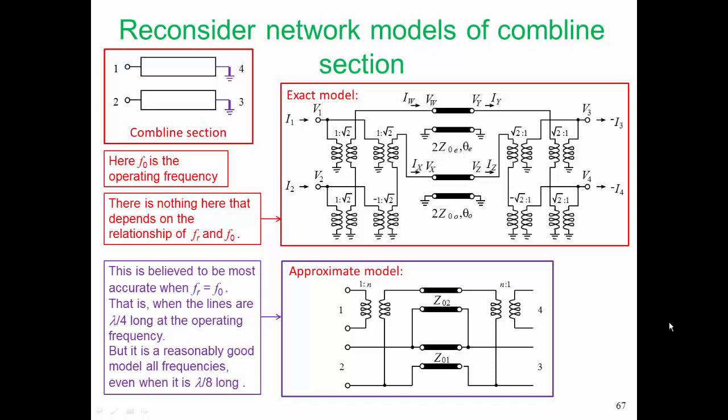So this approximate model doesn't depend on that relationship of FR equal to F0. That happens to be when the model is the most accurate, but it is pretty good at other frequencies. Now in the end, we can live with these approximations because we're going to do a detailed EM simulation of our filter, and we will be able to look at the effect of all of our approximations. And we know that this approximation is minor because when we do a detailed EM simulation, everything seems to come out pretty well.